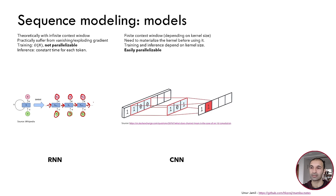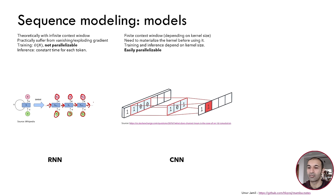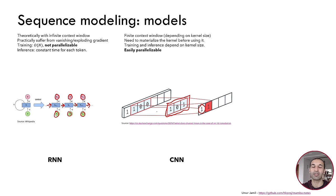Another model we can use for sequence modeling, though not very common recently, is the convolutional neural network, which is mostly used for computer vision tasks. It has a finite context window and uses a kernel that is run through the input to produce output features. It is easily parallelizable because each output uses the same kernel, so we can run the kernel in parallel on all possible input windows.